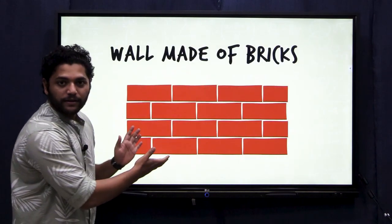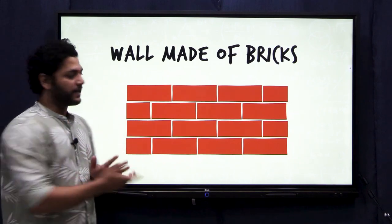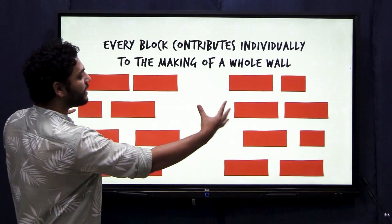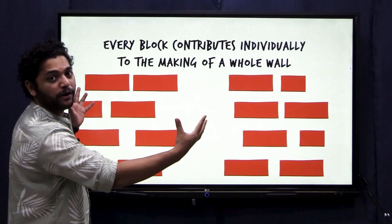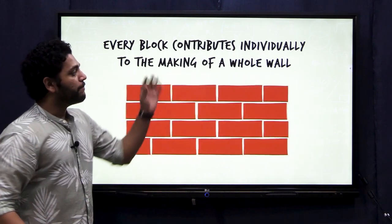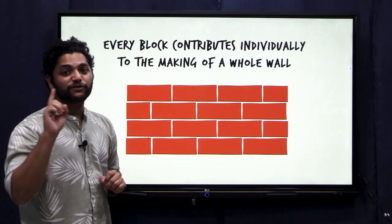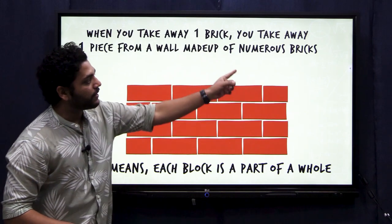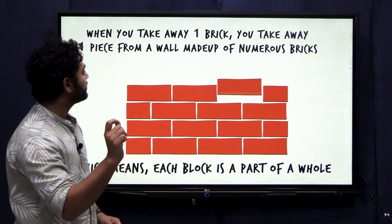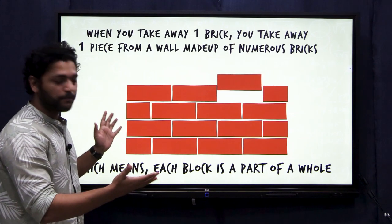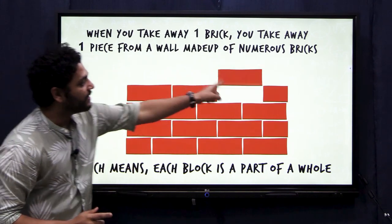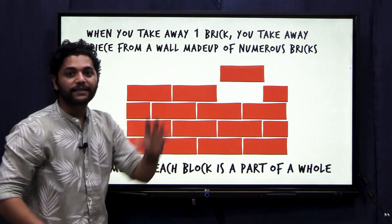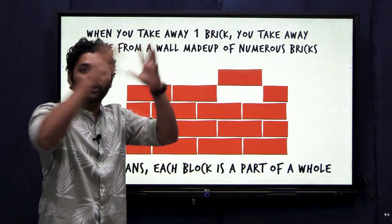This wall is made up of numerous bricks. Each brick contributes to the making of the whole wall. If all the bricks are apart, they do not form a wall, but when they come together, they make a whole wall. Therefore, when you take one brick, you take away a piece from the wall which is made up of numerous bricks. This one piece is a part of the whole — I can say that this one brick is a fraction of the whole.